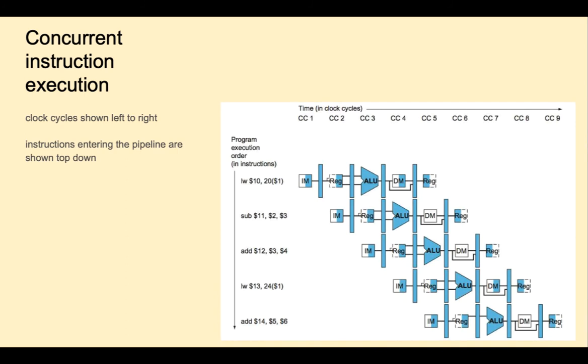These timing diagrams show the clock cycles going left to right, and the instructions coming into the CPU, top down. Again, we see that we can work on up to five instructions at a time. The register accesses you see for the two load word instructions are not a structure hazard, because we're writing to the register in the first half of the first load word, and reading from it in the second half of the clock cycle for the second load word.